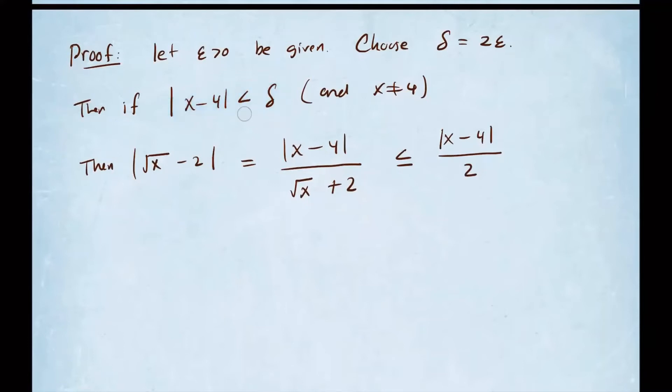Well, delta is 2 times epsilon. So this is going to be less than 2 times epsilon over 2, which is equal to epsilon. And that's what we wanted. So now we're happy. We're able to complete the proof. So we have proven that the limit as x approaches 4 of square root of x is 2. That completes our proof.